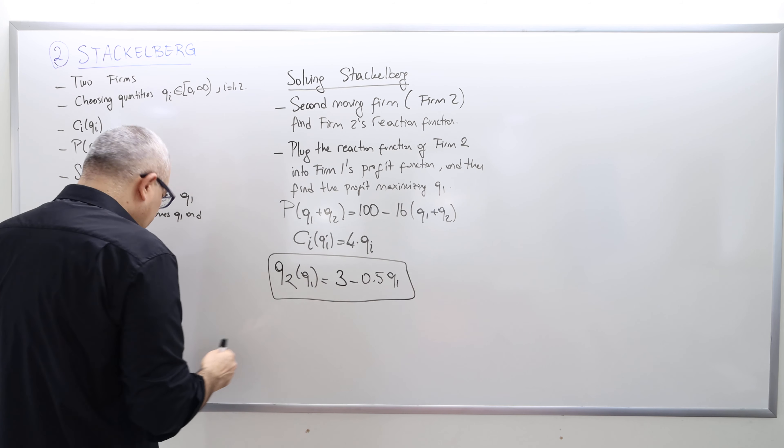In the Cournot case, the optimal quantity for both firm 1 and firm 2 was 2. Here in Stackelberg, however, Q1 = 3 — firm one produces more. The optimal quantity for firm 2 comes from the reaction function: Q2 = 3 − 3/2 = 3/2 = 1.5. So firm 1 produces one unit more and firm 2 produces half a unit less than in Cournot, meaning firm 1's profit is higher and firm 2's profit is lower.